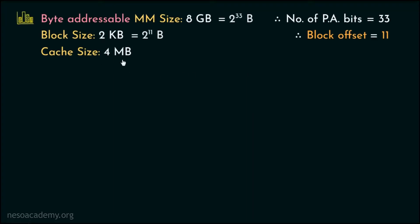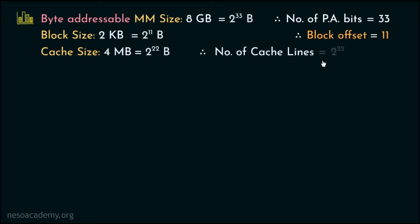The cache size is given as 4MB which in terms of bytes is 2 to the power 22, because 4 is 2 squared and megabyte is 2 to the power 20. We can find out the number of cache lines by dividing the cache size, 2 to the power 22, by the block or line size, 2 to the power 11, which gives us 2 to the power 11. Therefore, there are 2 to the power 11 lines inside the cache.